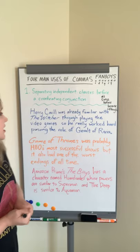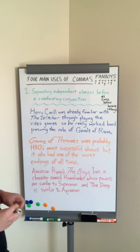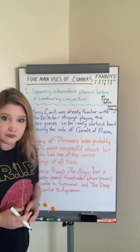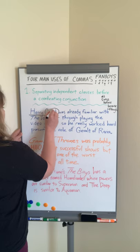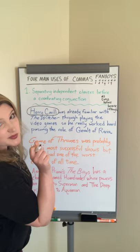I decided to make all the example sentences for today's lesson about TV shows. So: 'Henry Cavill was already familiar with The Witcher through playing the video games.' That's one independent clause right there. The subject is Henry Cavill. We love Henry Cavill in this house. He is the subject, and the predicate is pretty simple — 'was.'